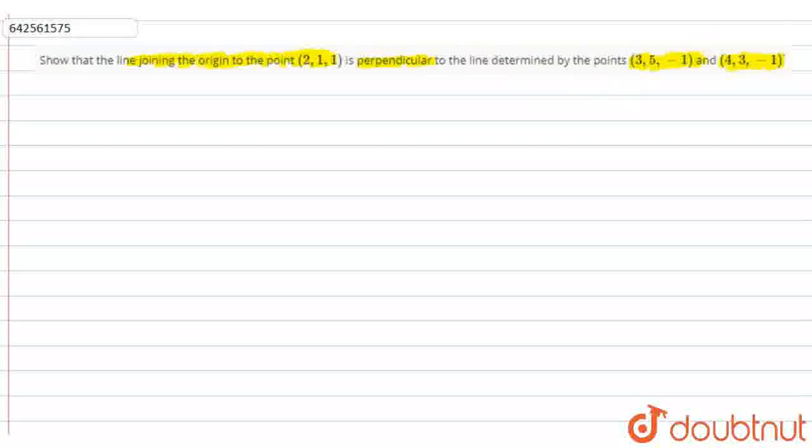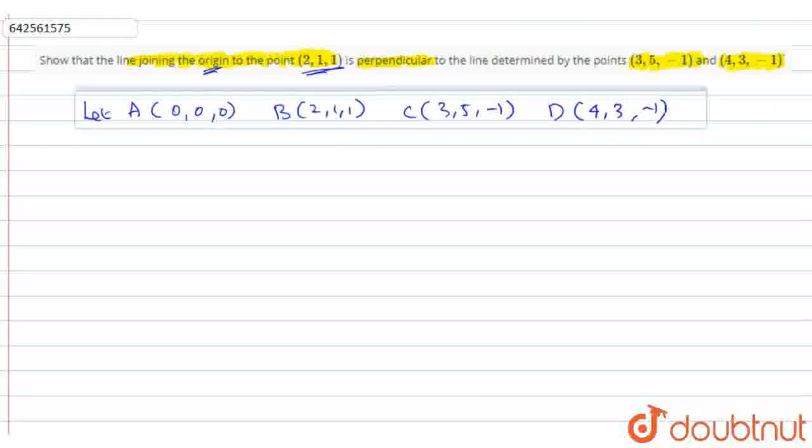So they have given two lines and asked to show that they both are perpendicular. Let me name these four points first. Let A be the origin (0, 0, 0), B be (2, 1, 1), C be (3, 5, -1), and D be (4, 3, -1).